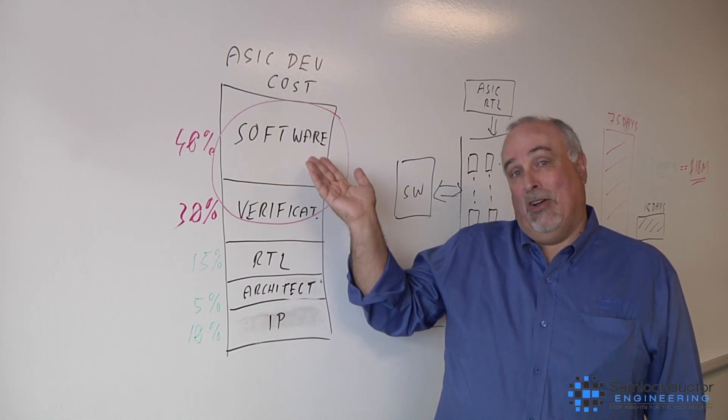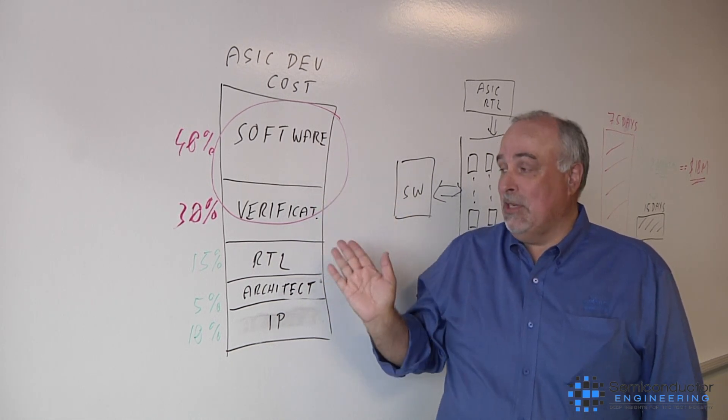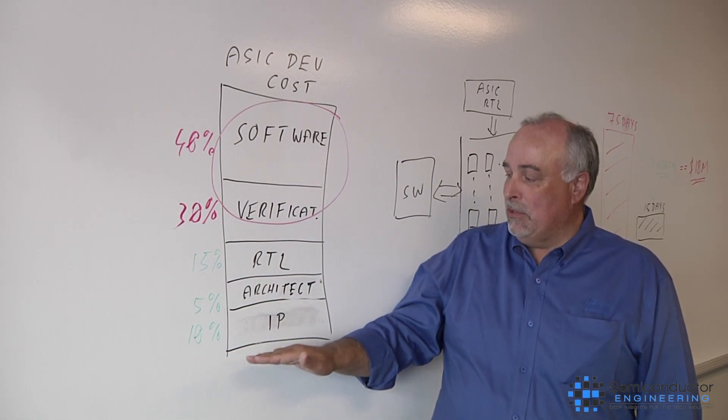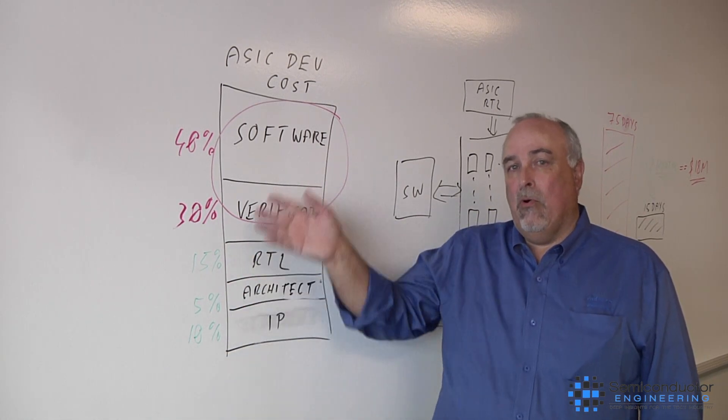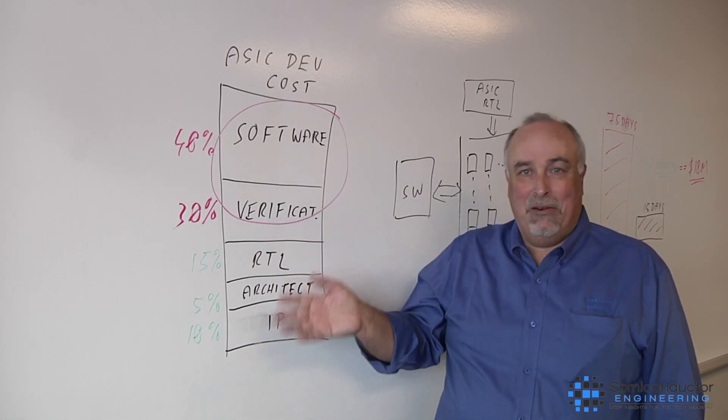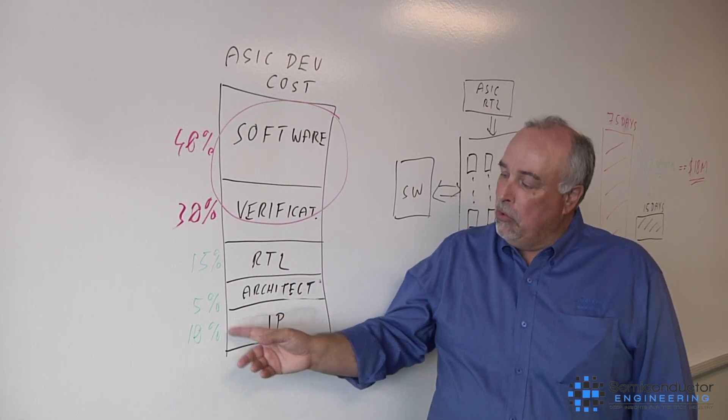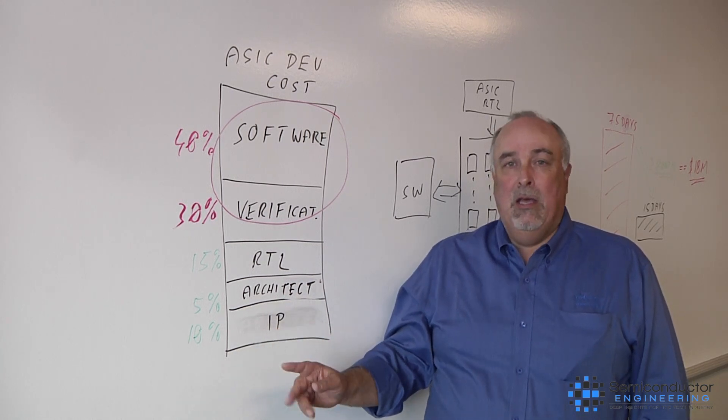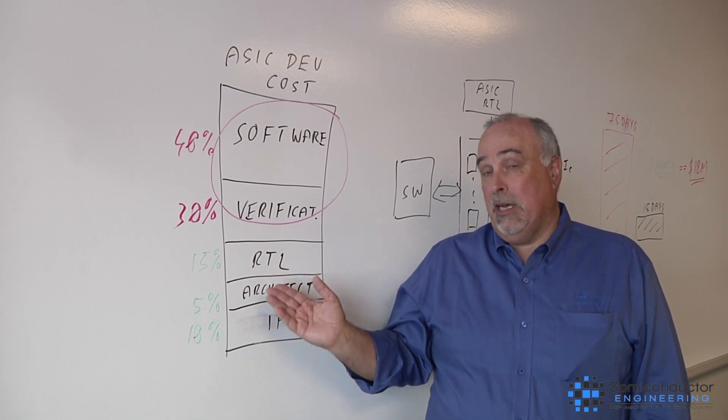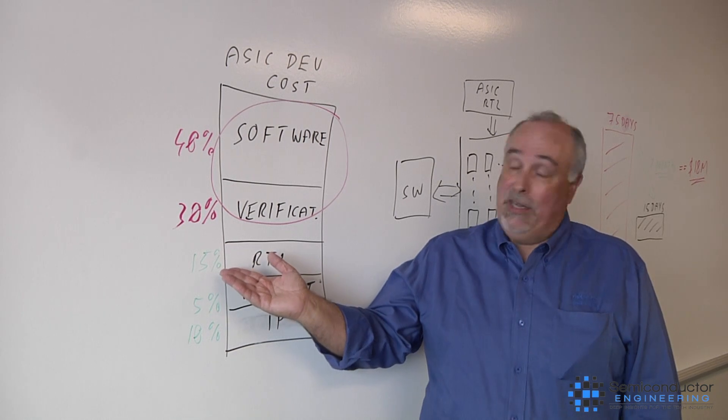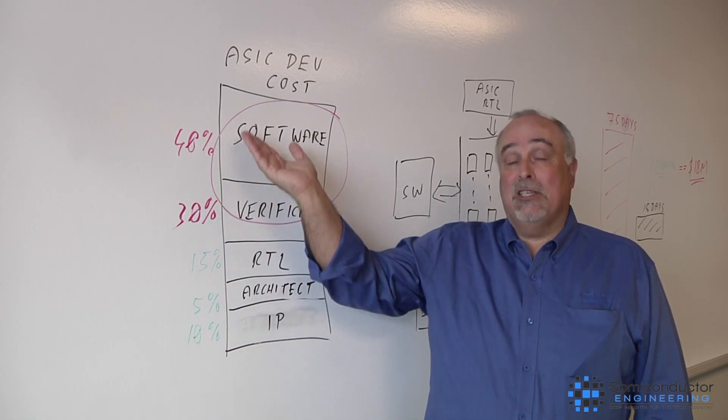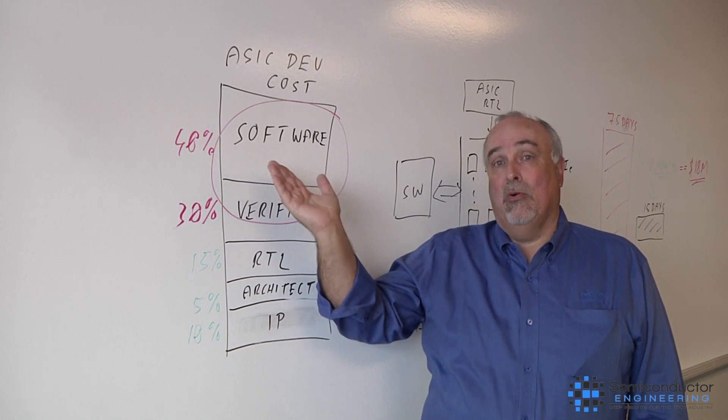But then you also have to verify that everything really works. And more often than not, you have a lot of software running on such a system. If you break that down into percentage points, then today for 7nm, 10nm ASICs, typically you spend about 10% of the overall cost for IP, roughly 5% for the architecture development, 15% for RTL development, however, 30% for verification, and as much as 40% of the costs go into software.